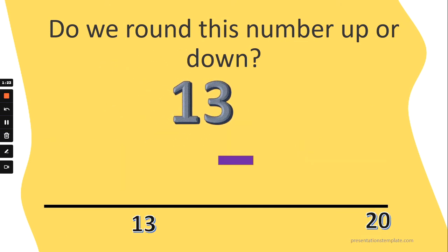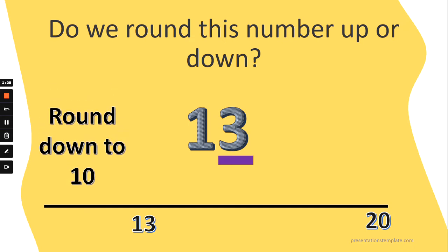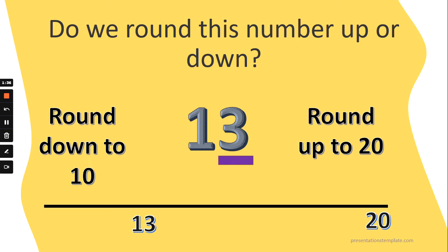What about this number? 13 — it's got three ones. Does 13 round down to 10? Is it closer to 10, or does it round up to 20? Is it closer to 20? Have a look at the position on the number line and let's think about the song if you're not sure. One, two, three or four — round down to the tens you started from. 13 rounds down to 10, it's closer to 10.